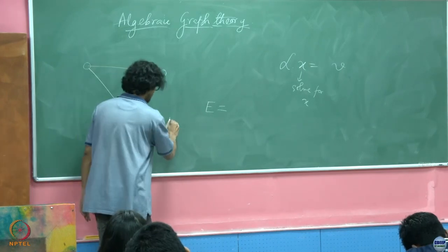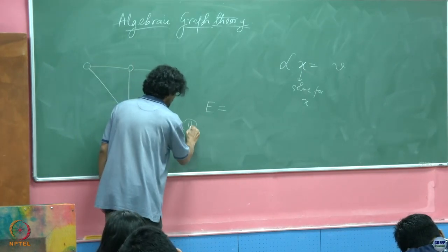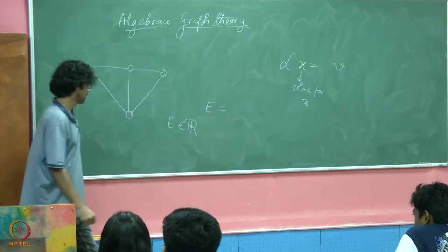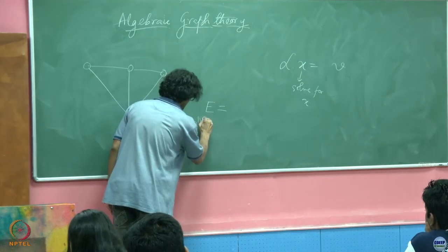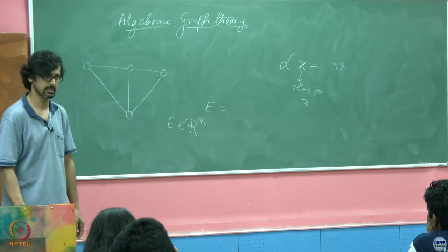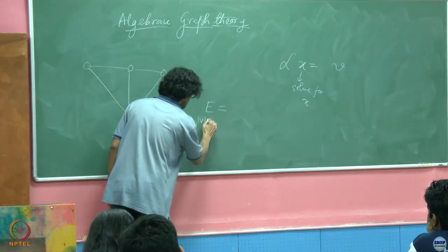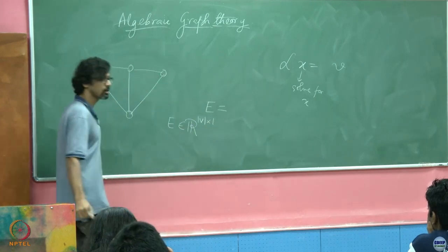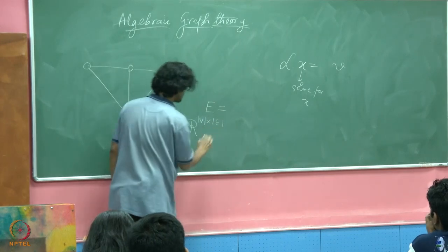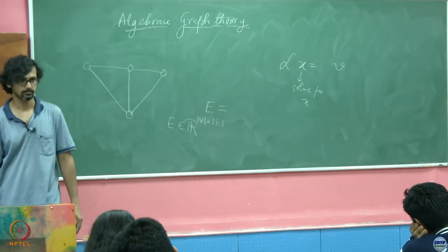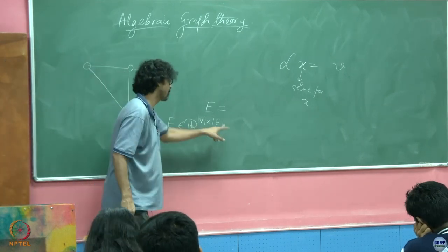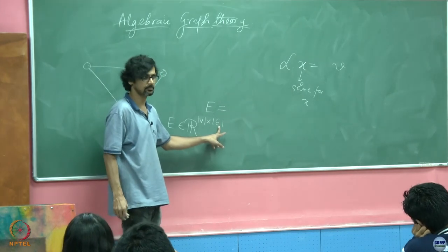The incidence matrix has a size where the number of rows equals the number of vertices — every row corresponds to a vertex. It is not a square matrix generally; the number of columns equals the cardinality of the edge set. We say it is n cross m where n is the number of nodes and m is the number of edges.